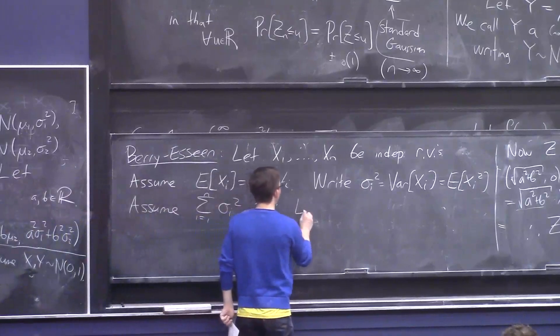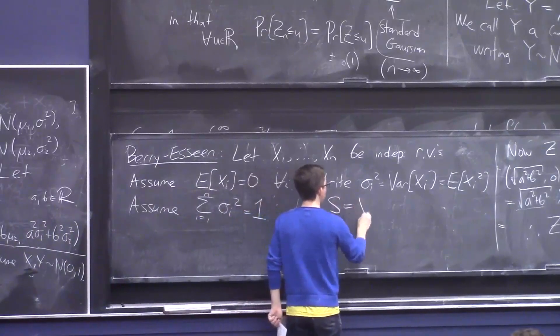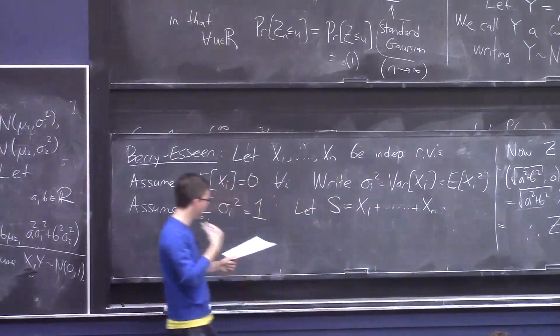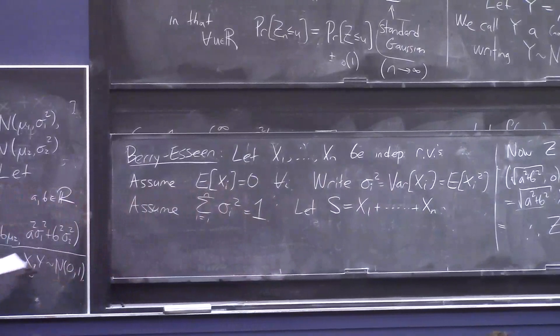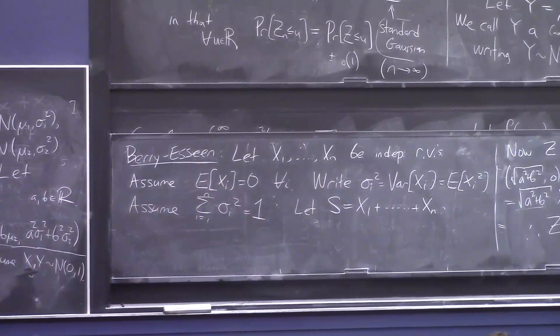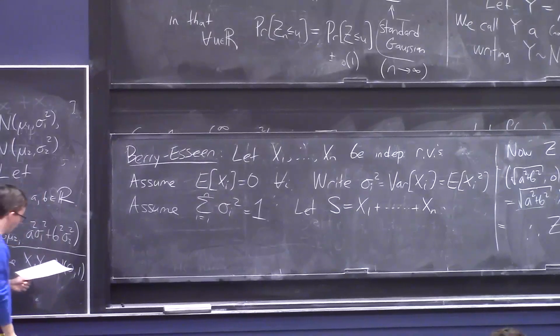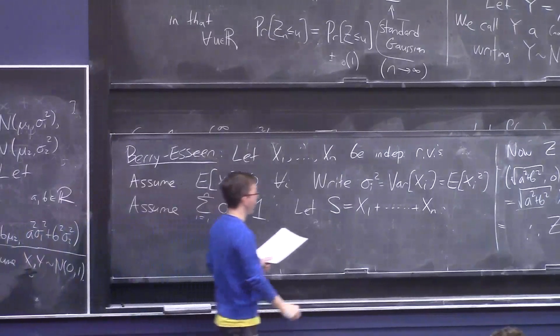And now let S be the random variable, which is their sum, which is the random variable we're interested in understanding. And what we want to say is the conclusion should be that S is similar to a Gaussian distribution. S's distribution is similar to a Gaussian's distribution. And that's true. I'm going to write a statement to that effect.